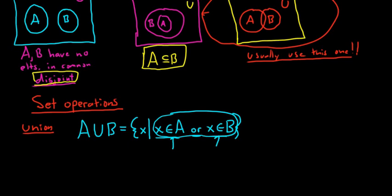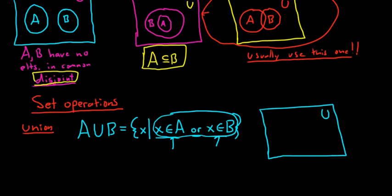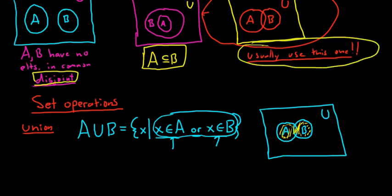The Venn diagram for union looks as follows. Here's our universe of discourse U, and then here is A, and then here is B. If we wanted to sketch this, it would be this yellow shaded region — everything in A, everything in B, or everything in both. So you shade everything in both sets completely. That's union, and that's the picture for union. You can see how the third generic picture has already paid off.